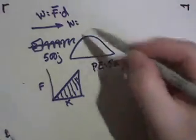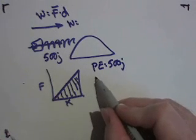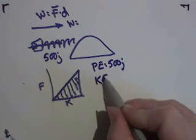And when you release the spring, it can do 500 joules of kinetic energy.